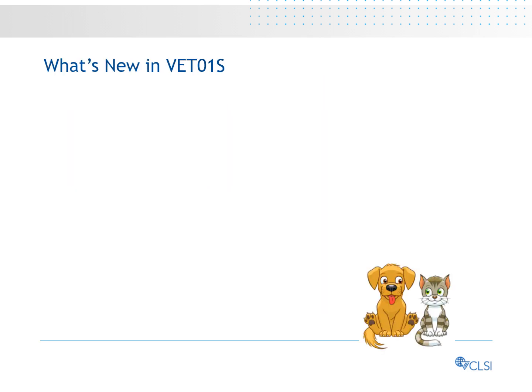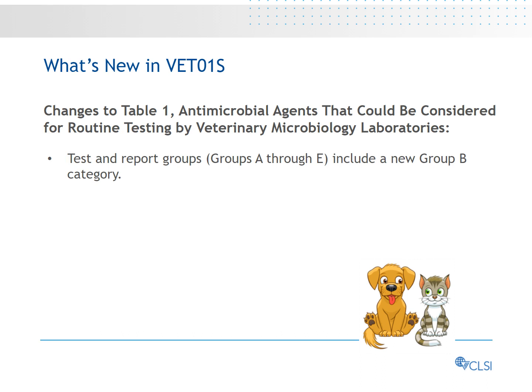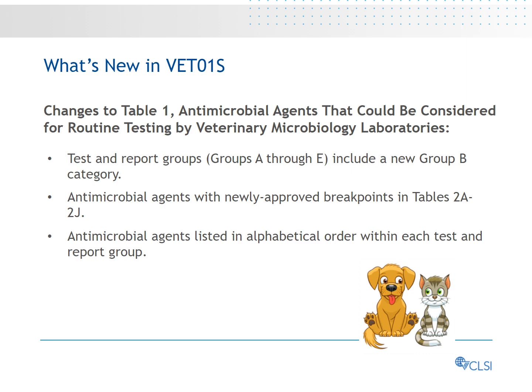VETO-1S is continually revised, providing veterinary diagnostic laboratories with updated information, including what's new in this 5th edition. Changes to Table 1 — antimicrobial agents that could be considered for routine testing by veterinary microbiology laboratories — including Test and Report Groups A through E, updated to include a new Group B category. Antimicrobial agents added correspond to newly approved breakpoints, listed in alphabetical order within each test and report group, and separated for dogs and cats.